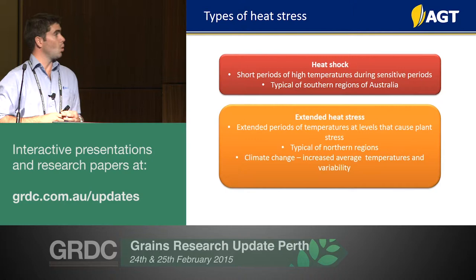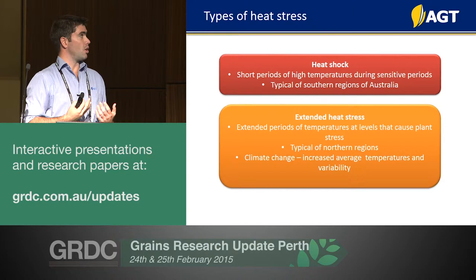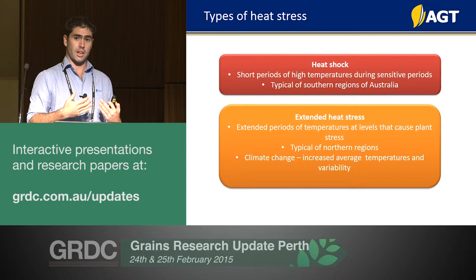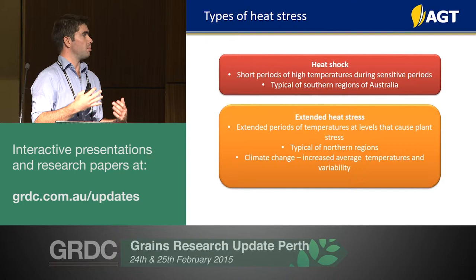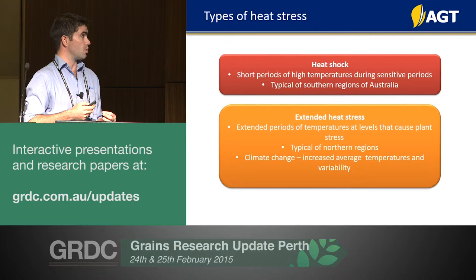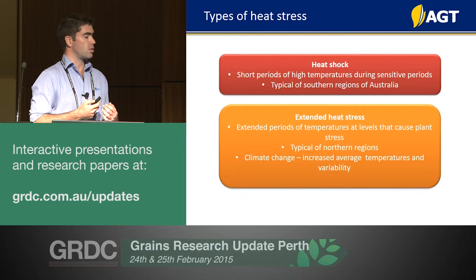There's also anecdotal evidence of different types of heat stress. In South Australia, heat shock is the big one — moderate temperatures followed by a day or a few days of really high temperatures that obliterate everything. But more common up north is a month or so of stable but hot temperatures in the low to mid-30s. We have evidence of genetic differences in response to these two stresses. My research with the heat chamber is largely focused on heat shock, but that's not to downgrade the importance of extended heat stress, particularly in the northern region.